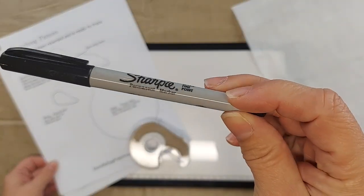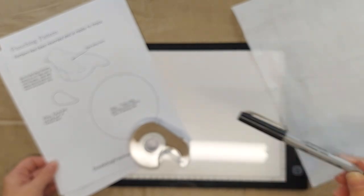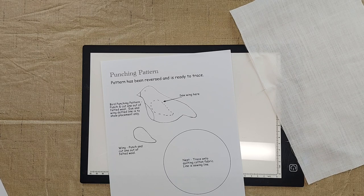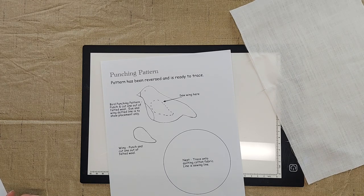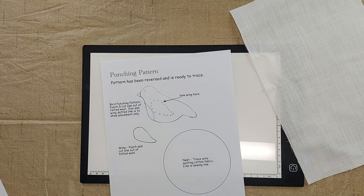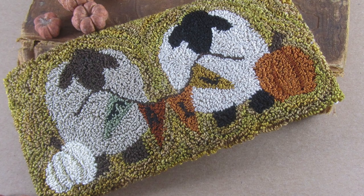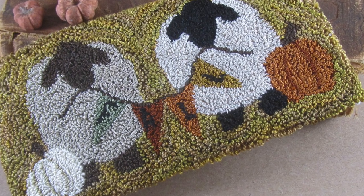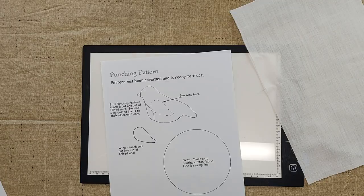I like to use a fine point Sharpie marker. When you're doing punch needle, you're working from the back side of the project, so you want to make sure that the pattern is reversed before you trace it. And this is especially important if you are doing a project that has some letters or numbers on it.